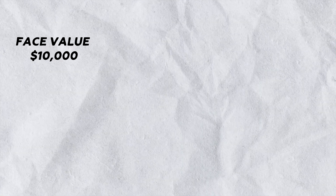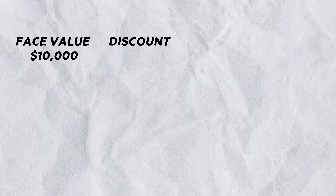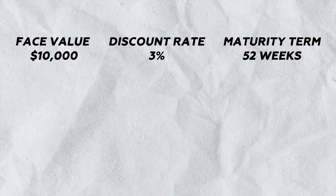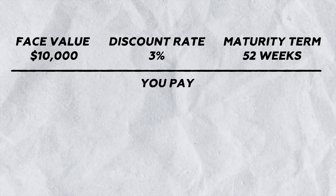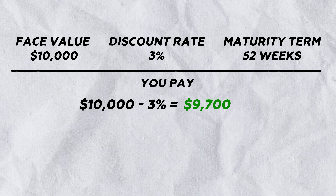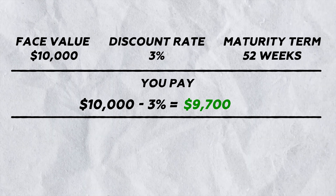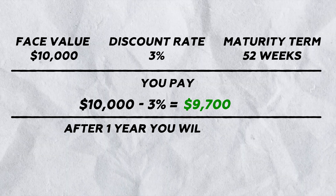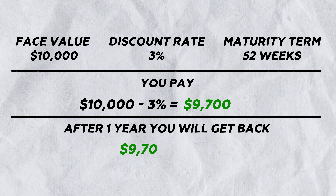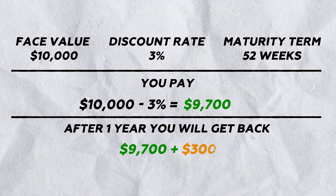So let's say you're buying a T-bill with a face value of $10,000 and the discount rate is 3% with a maturity term of 52 weeks. You're going to be buying the T-bill for $9,700 — that's $10,000 minus that 3% discount rate. And after one year, when that T-bill matures, the government pays you back that $9,700 plus $300, so you'll be getting your full $10,000.